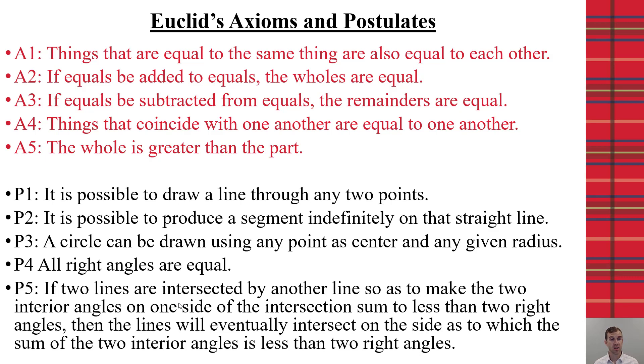Whereas the postulates are about constructions, we can draw a line through any two points. We can construct a segment on that line. We can create a circle through any point with a given radius. All right angles have to be equal to one another.